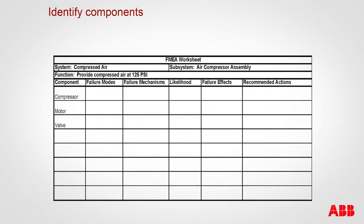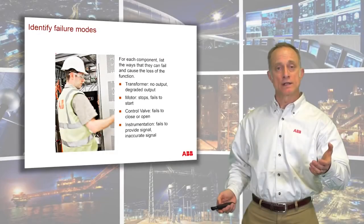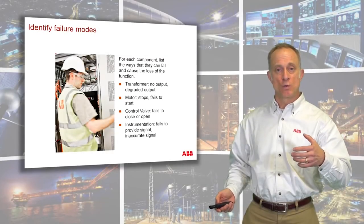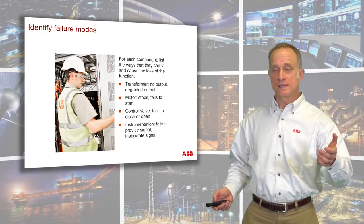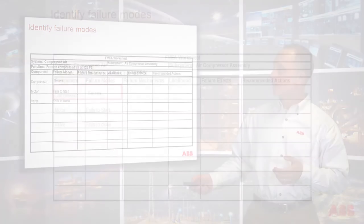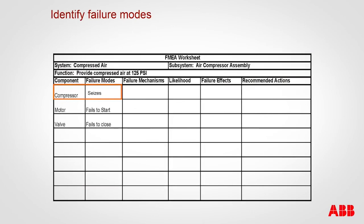In our failure modes and effects analysis worksheet, we'd have the compressed air system looking at the subsystem of the air compressor assembly, with components being compressor, motor, and valve. We then identify failure modes — what could go wrong. For a compressor, it might seize. For a motor, it might fail to start. For a valve, it might fail to close.